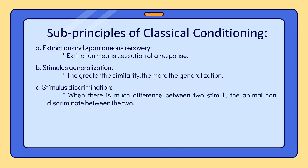Stimulus discrimination occurs when there is much difference between two stimuli — the animal can discriminate between the two. For example, if the dog is conditioned to salivate at the signal of a red light, it will not salivate when a green light is presented. The same applies to the sound of a bell compared to the honk of a car.